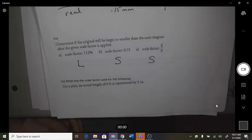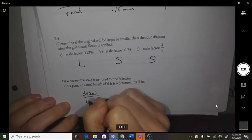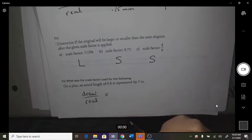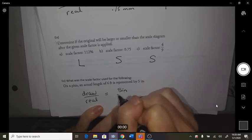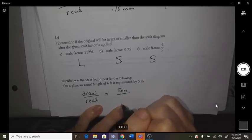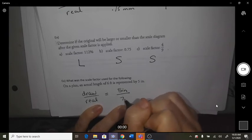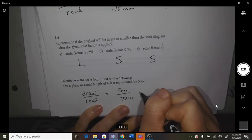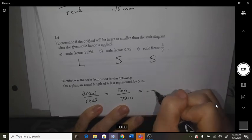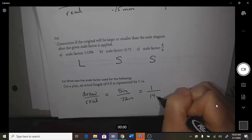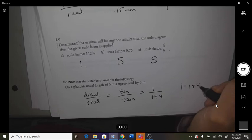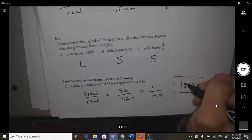What was the scale factor used for the following? On the plan, an actual length of 6 feet is represented by 5 inches. Okay, so 5 inches was the drawing, and the real was 6 feet. So 6 times 12 is 72 inches. So if we divide each by 5, we get 1 and 14.4. So that was the scale that was used.